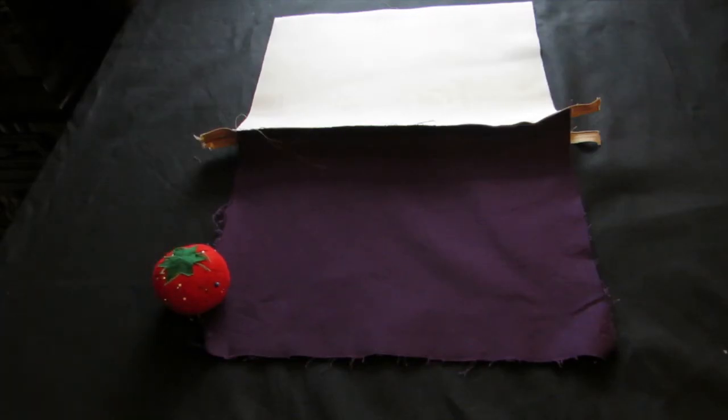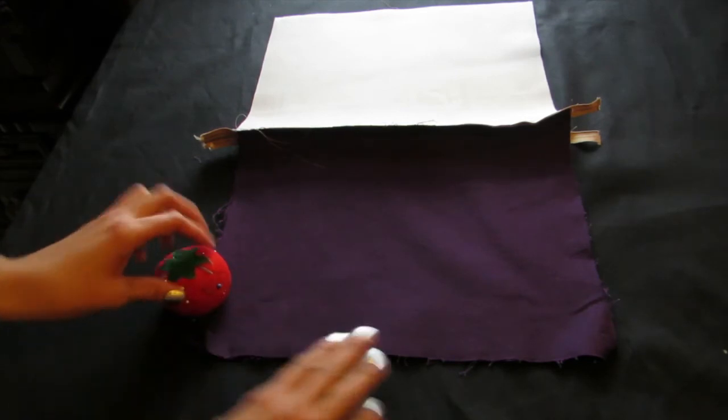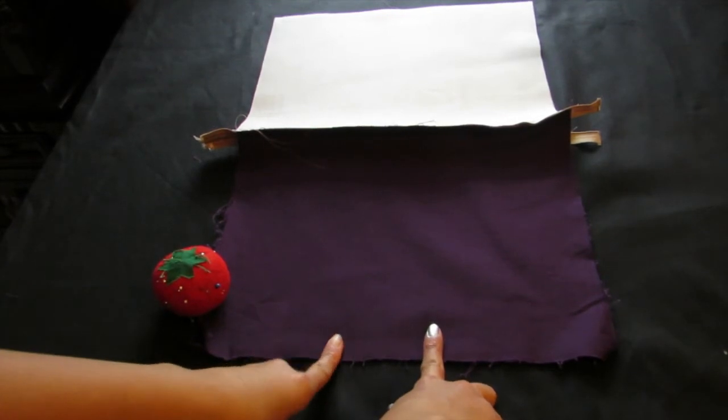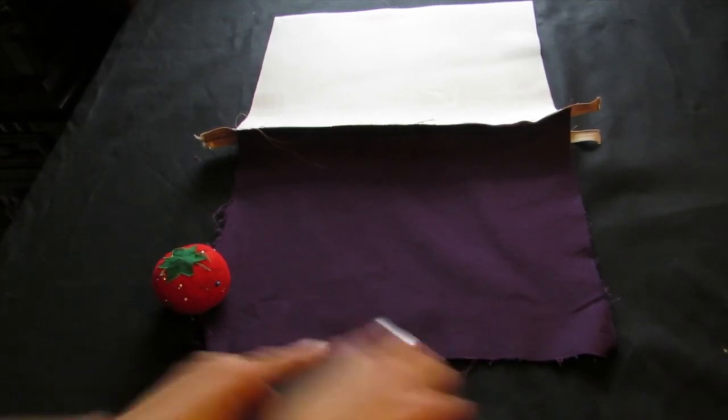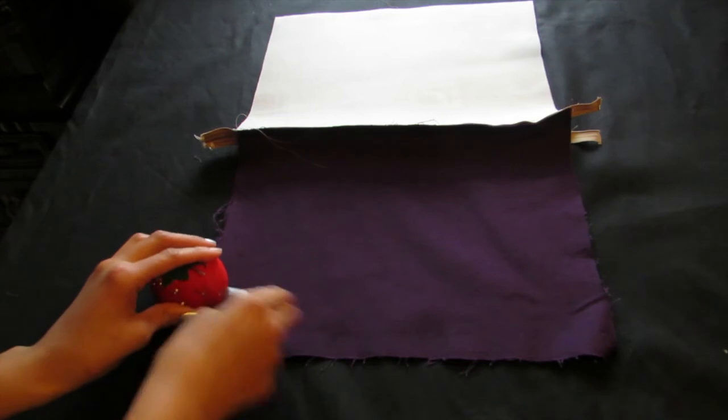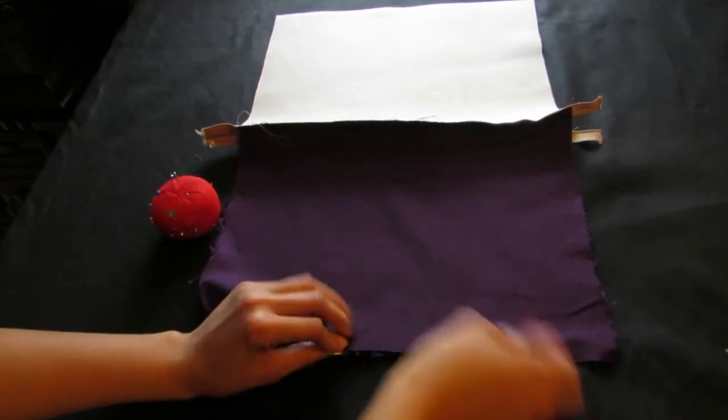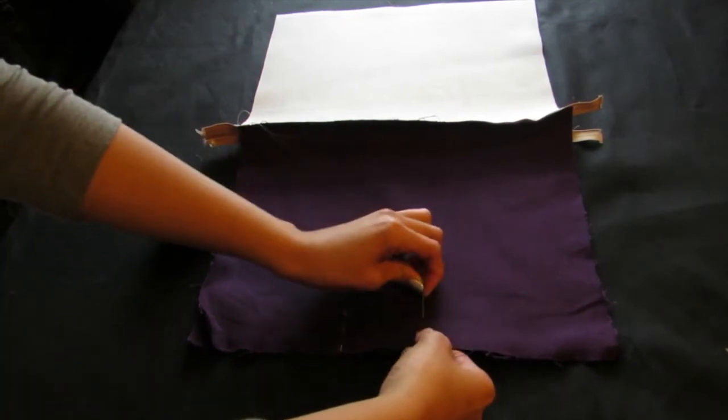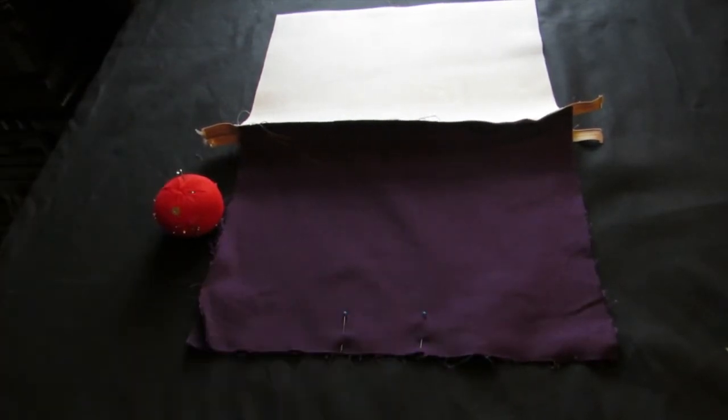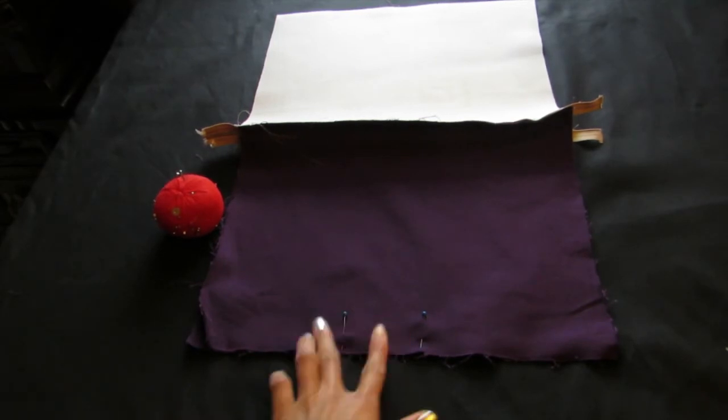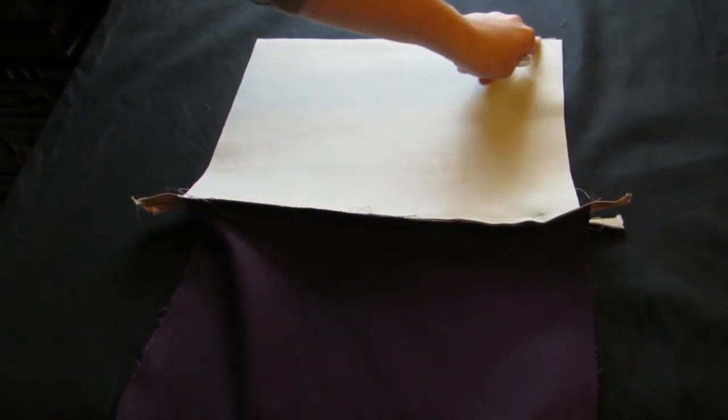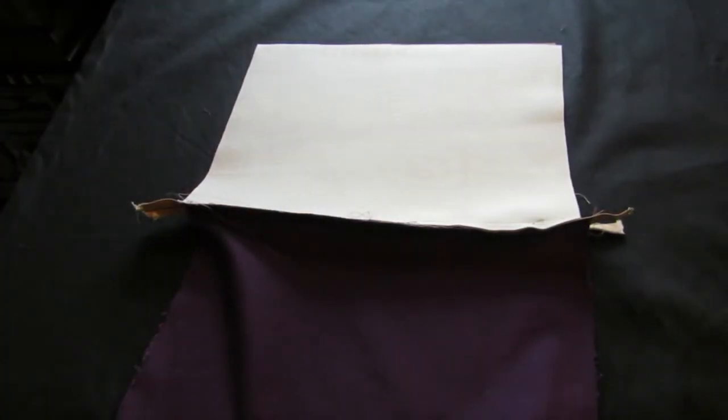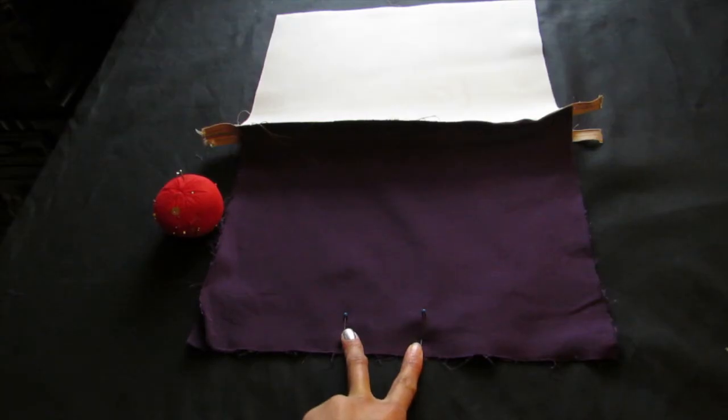It is time to pin along your edges of your lining and your faux leather fabric. You will keep a two inch gap which allows you to pull through the fabric. When you get towards the middle I would suggest to unzip your zipper at least half way. So you're going to start on your left, go all the way around, and end on your right.